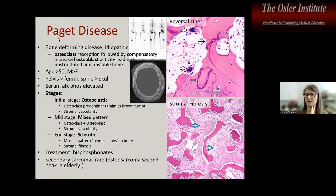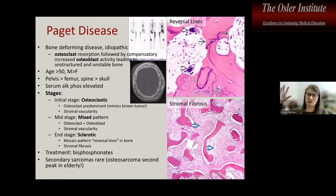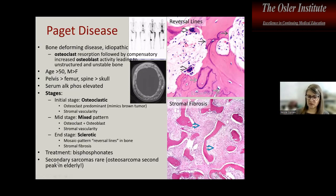Paget's disease is a deforming condition with high osteoclastic and osteoblastic activity. Initially osteoclastic, then a mixed stage, then an end stage with a mosaic deposition pattern in bone due to repeated resorption and deposition in a haphazard manner. You get abnormal, thick, dense bone with fibrosis.